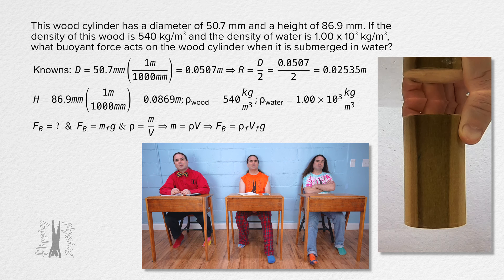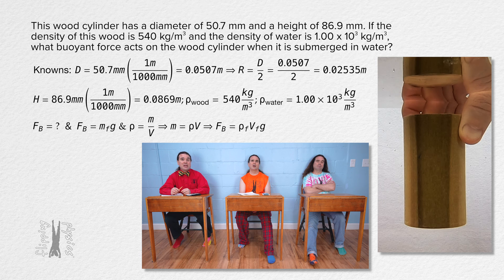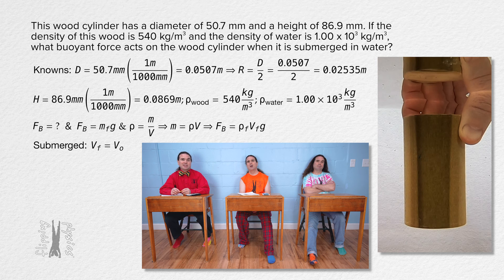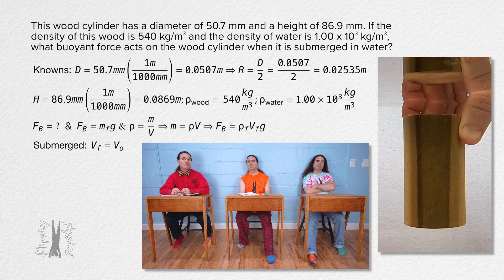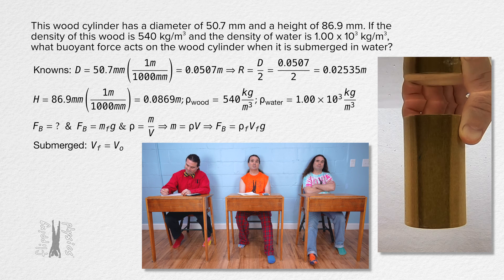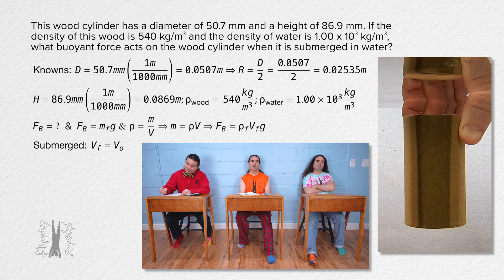I don't know what to do next. I think we need to remember from last time that when an object is submerged in a fluid, the volume of the fluid displaced by the object is the same as the volume of the object itself. The water is all around the wood cylinder, so the volume of the fluid the cylinder displaces equals the volume of the object.